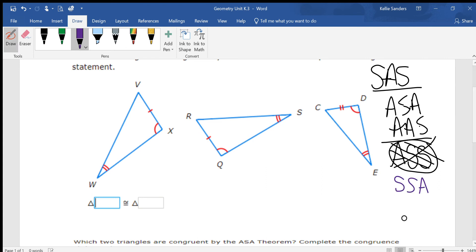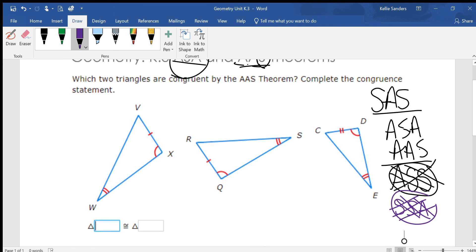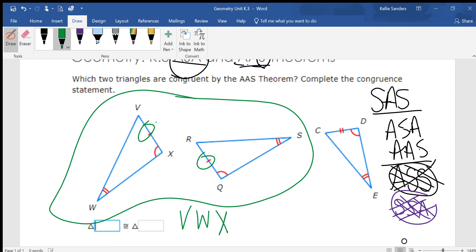So on this, when it says Angle Angle Side, we're going to have two angles in a row and then a side. And all of these are two angles in a row and then a side, but this side is the one and that WX is congruent.